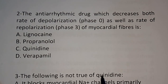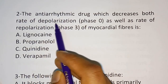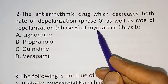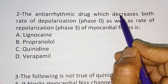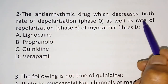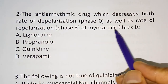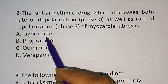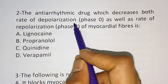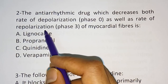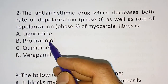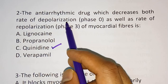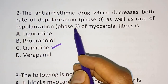Question 2: Which anti-arrhythmic drug decreases both the rate of depolarization of phase 0 as well as the rate of repolarization, that is phase 3, of myocardial fibers? Options are lignocaine, propranolol, quinidine, and verapamil. The correct answer is quinidine. Quinidine has the action of decreasing the rate of depolarization as well as the rate of repolarization, that is phase 3.